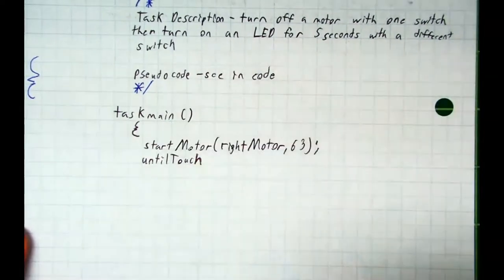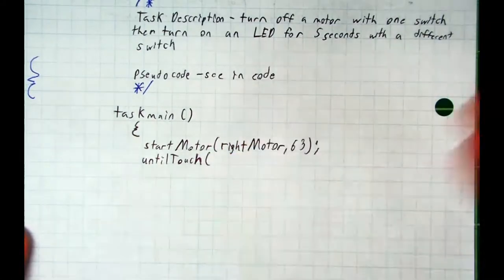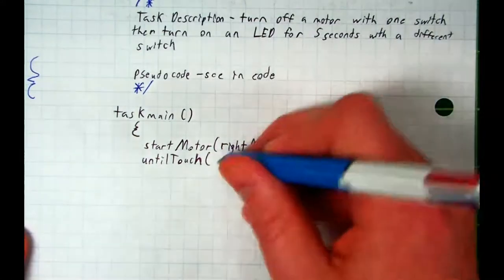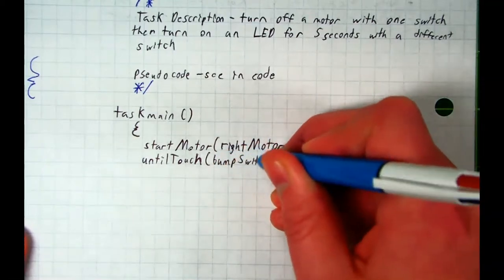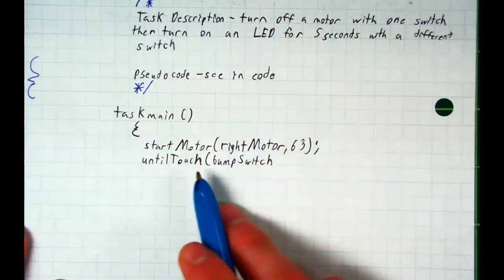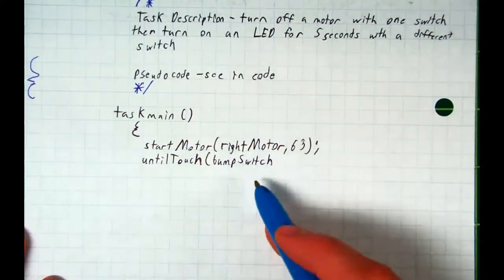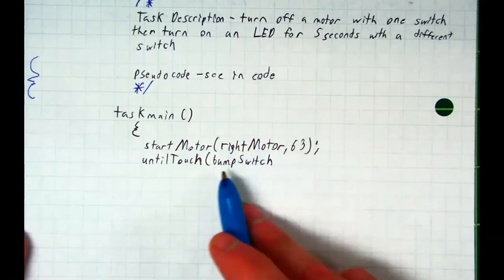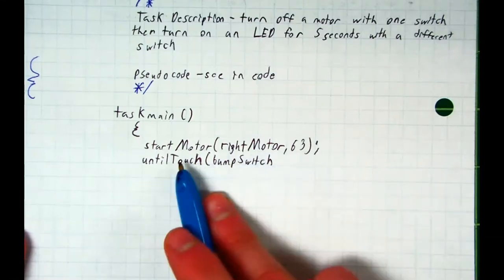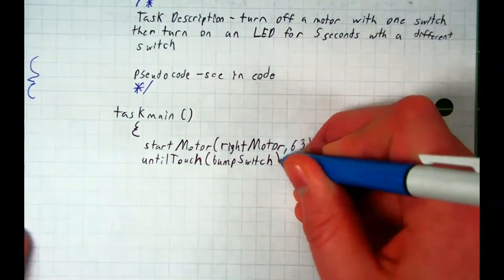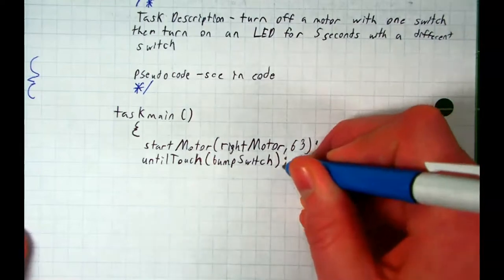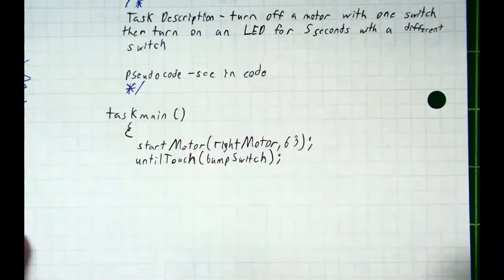And I'm going to have it be the bump switch. So we say untilTouch, open parentheses, we got to label what switch we have to hit—lowercase b, bump, uppercase S, switch. Now you are either touching the bump switch or you are not. Yes or no, on or off. I don't need to label any kind of designation. If I touch it, it's on. If I'm not, it's not. So I don't have to write a comma or a zero or a one or anything. I just close the parentheses and write a semicolon.